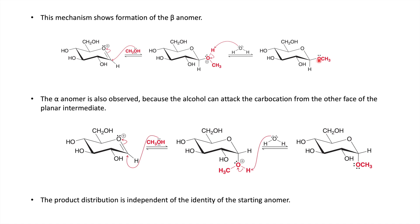The product is the beta-anomer because the methoxy group and the CH2OH group are in cis conformation on the same side. You will also get the alpha-anomer because methanol can attack from the back side as well. So you get both alpha and beta anomers. It doesn't matter which anomer you start from — if you start from alpha-D-glucose, you get a mixture of alpha-glycoside and beta-glycoside, because methanol attacks from both the front and back sides.